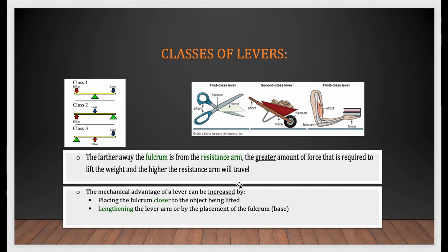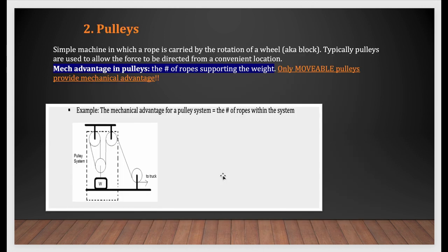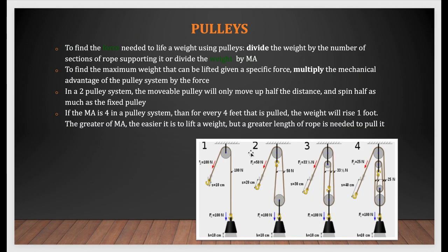The next thing is the pulley. The mechanical advantage of a pulley is the number of ropes supporting the weight. You need to find the mechanical advantage of a pulley — it could be one, two, three, or four. You can see in this slide the mechanical advantage of one, two, three, and four, so make sure you learn those.